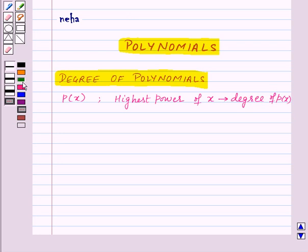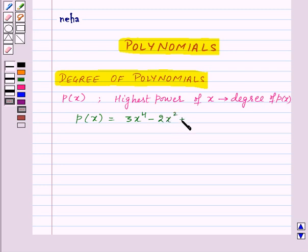Let us take an example for this. Suppose we have a polynomial P of X equal to 3X to the power 4 minus 2X squared plus 7. Here in this polynomial, the highest power of X is 4. That means the degree of P of X is 4.